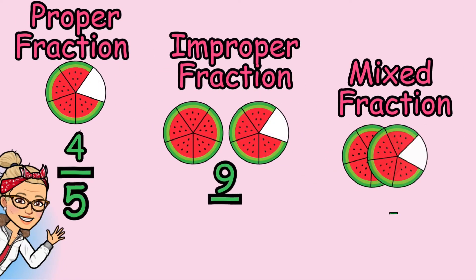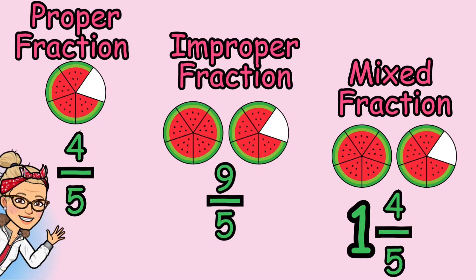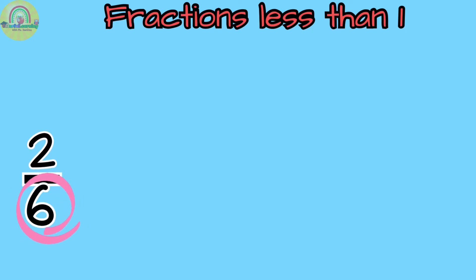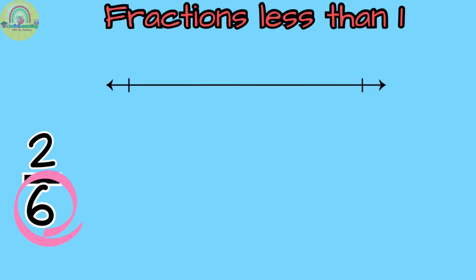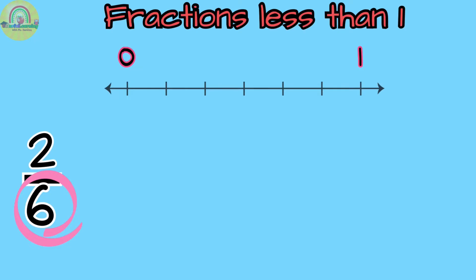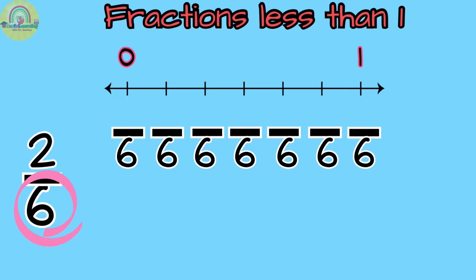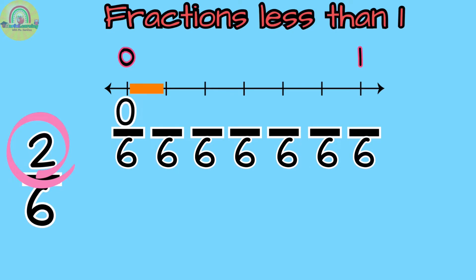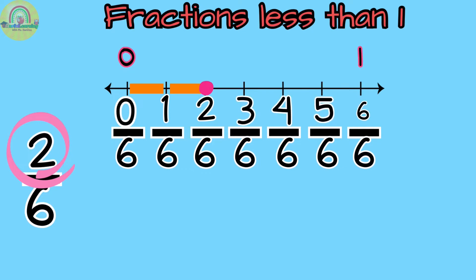By the way, if you need to know more about classification of fractions, you can watch this video — the link will be in the comments below. When placing fractions on a number line, the denominator, which is the number at the bottom, will tell me how many equal spaces the number line will have. In this case, the number line will have six equal spaces because my denominator is six. Then we look at the numerator, the number at the top, which tells me how many spaces I will count. In this case, I will count two spaces because my numerator is two. So here is where I place my fraction two-sixths, and then all the other fractions.